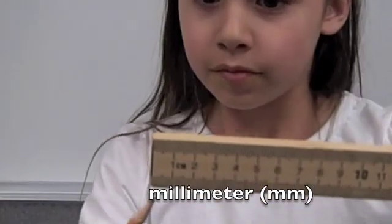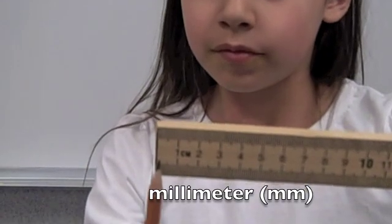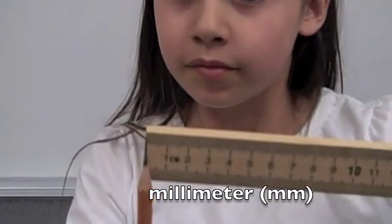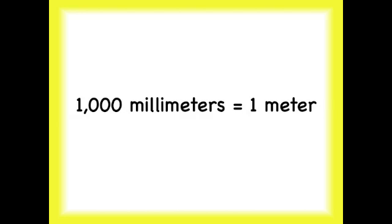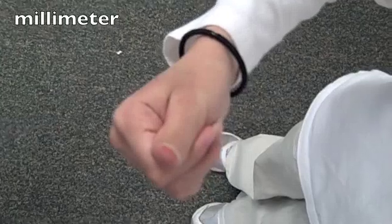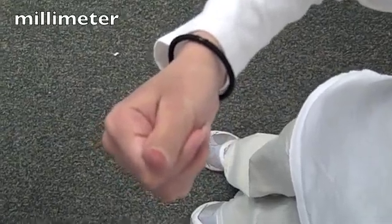Sometimes you may need to measure something very small like the thickness of the lead on your pencil. If you divide a meter into 1,000 pieces, you get a millimeter. That means there are 1,000 millimeters in one meter. Look at the tip of your fingernail. The tip of your fingernail is about 1 millimeter thick.